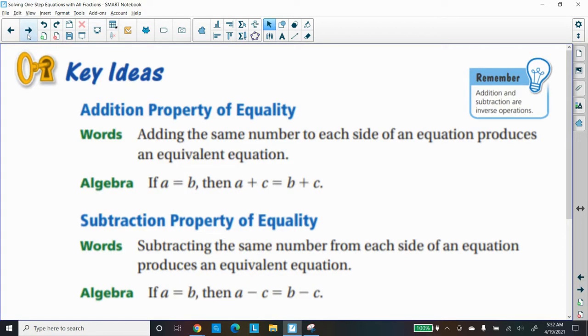The key idea is to use the addition property of equality, where you're adding the same number to each side of the equation, which produces an equivalent equation. In algebra we say where a is equal to b, then a plus c equals b plus c, because what we did was we added the c to both sides, so it makes the equation balanced.